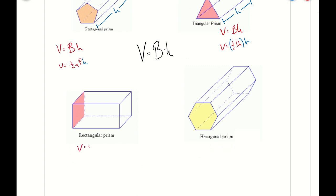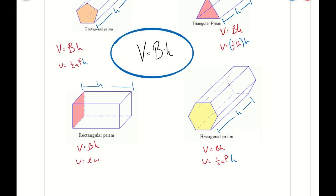A rectangular prism is still big B times H, where big B is just length times width, and H represents the height of the prism. Same thing for a hexagon — it's going to be the same as the pentagon because it's a regular polygon, where the area of the base is one half the apothem times the perimeter, times the height of the prism. The main thing to remember is that B is the area of the base and H is the height of the prism.